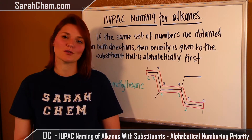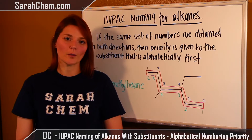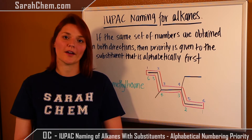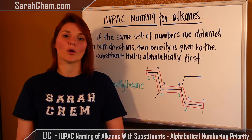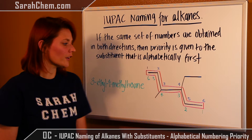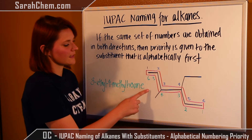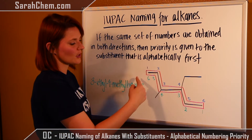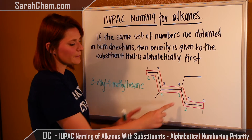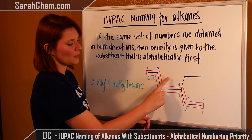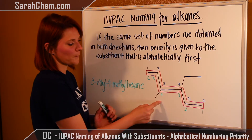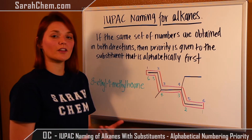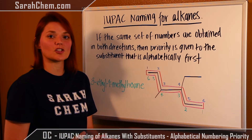Hi everyone. This is a video tutorial to help you out if you ever run into a case where, when you number a parent chain in both directions, you get equivalent numbers. Looking at this case, if I number in this direction or in this direction, I get the substituents on the same positions — 3 and 4. So now I'm going to have an option to give one of these substituents priority.